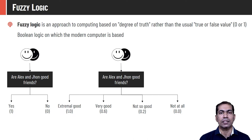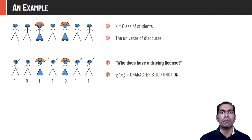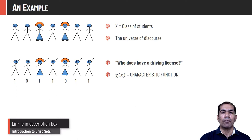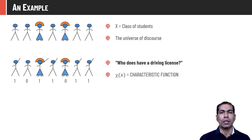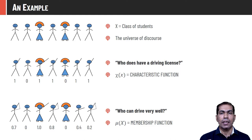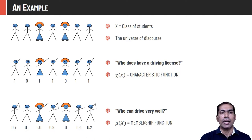If we change the question to 'who can drive very well,' that is subjective. According to skill, students might be given different membership values between 0 and 1 — those who drive very well get value 1, those who don't know how to drive get 0, and others get values like 0.8, 0.7, 0.3, 0.5, etc. So the membership value now varies between 0 to 1, representing an infinite-valued logic.